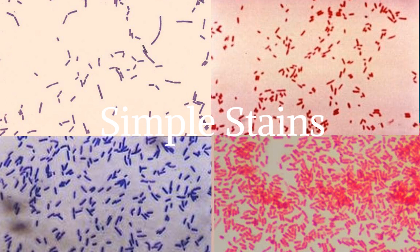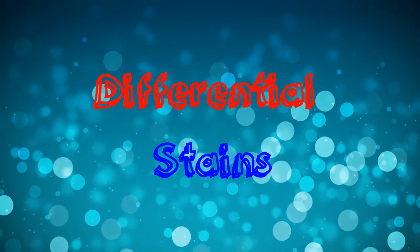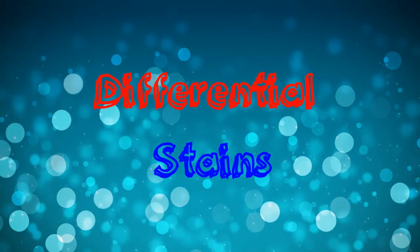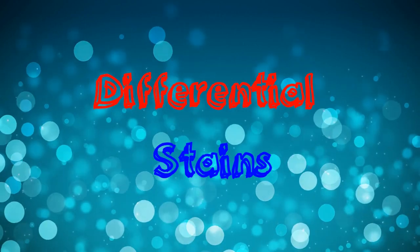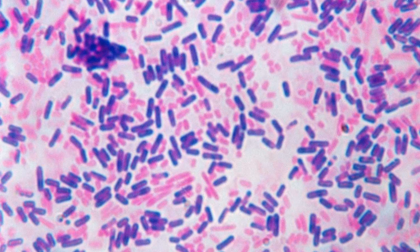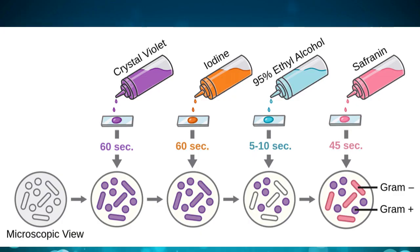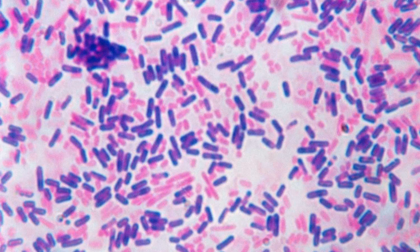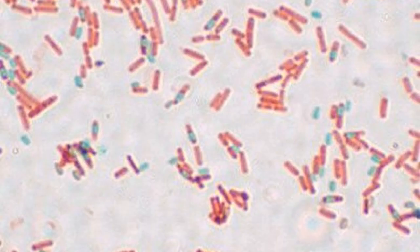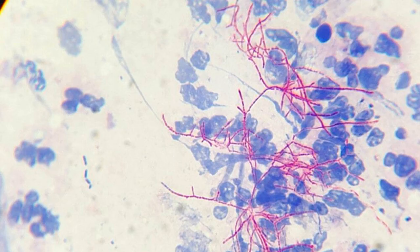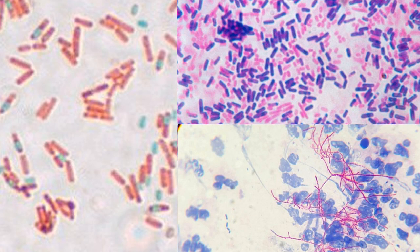Differential stains use two different colored dyes — a primary dye and a counterstain — to create clear contrast between different cell types or cell parts. They are more complex and may require additional chemical reagents. Common color combinations include red and purple, red and green, or pink and blue. Like simple stains, differential stains also show the size, shape, and arrangement of cells.